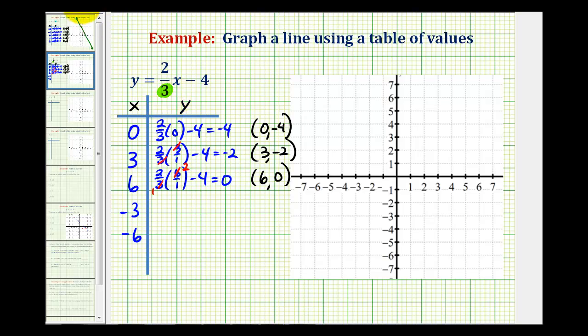And when x is negative 3, we'd have 2/3 times negative 3 over 1 minus 4. And again, notice how we have a common factor of 3 here. This simplifies to 1, this simplifies to negative 1, so we have 2 times negative 1, that's negative 2, minus 4, so we have negative 6. So, the line contains the point with x coordinate negative 3, y coordinate negative 6.